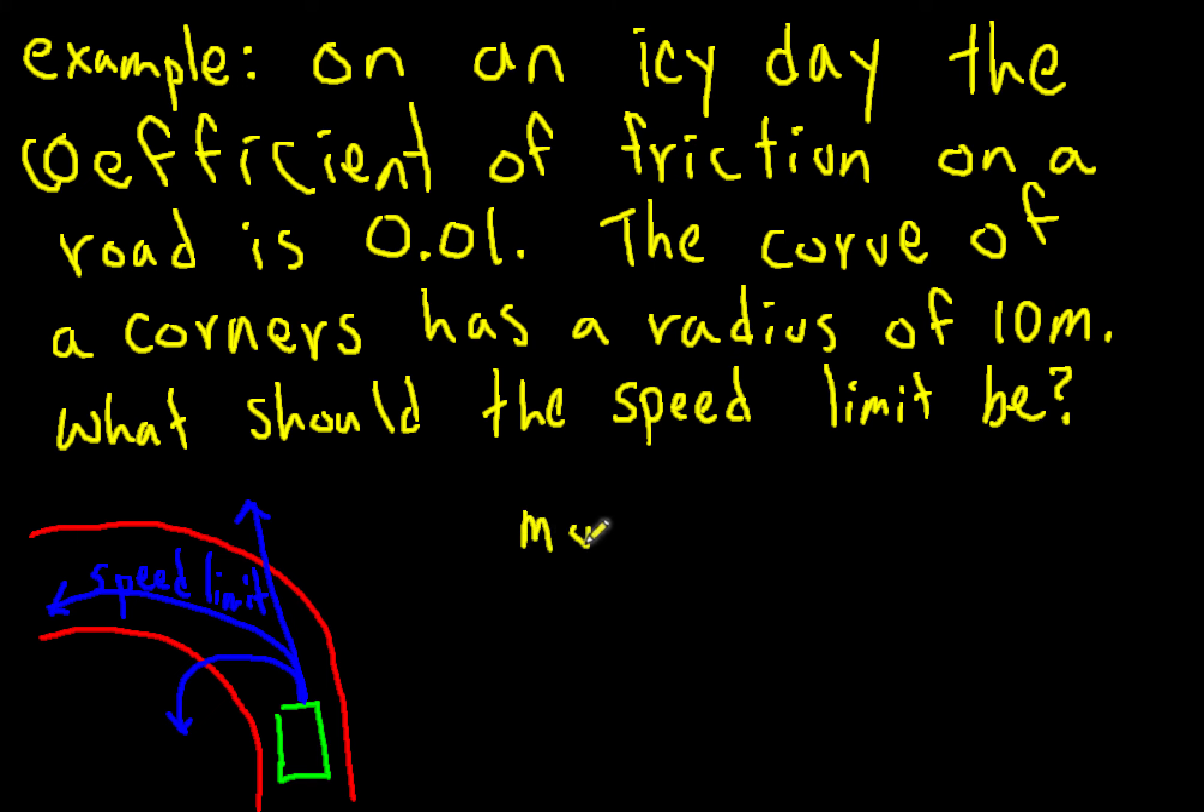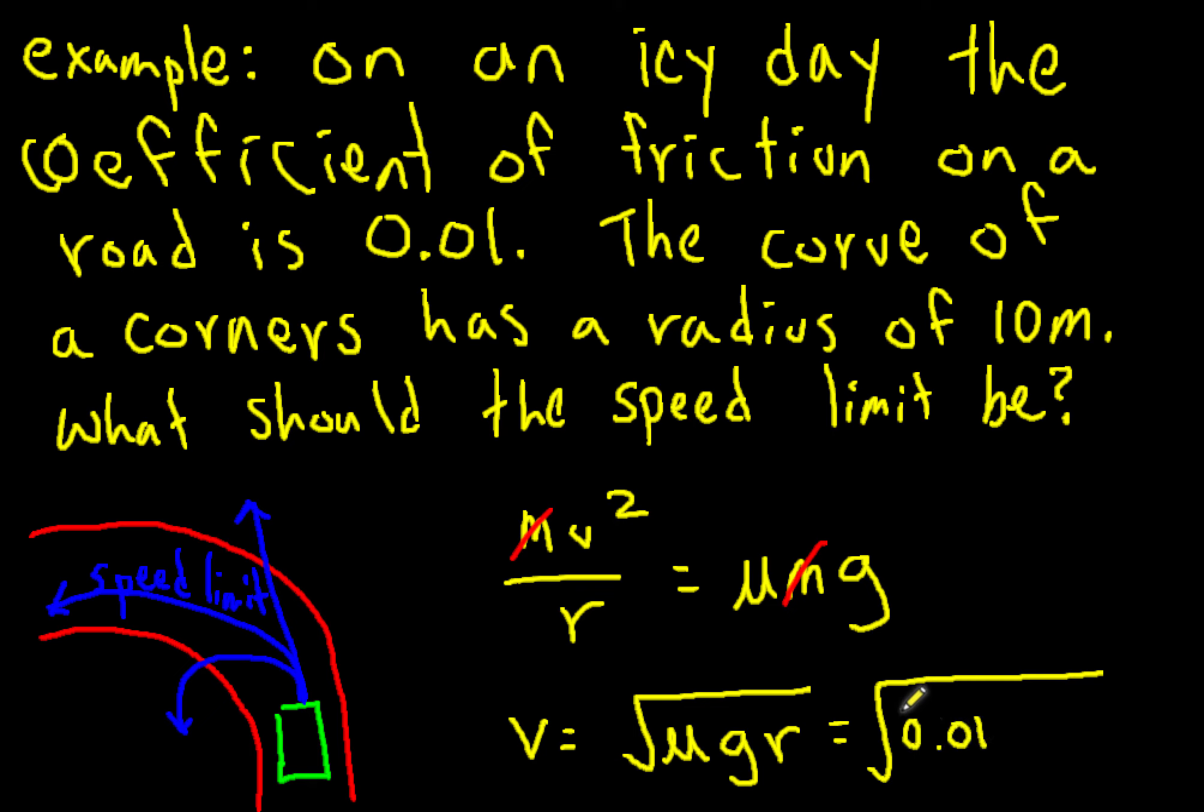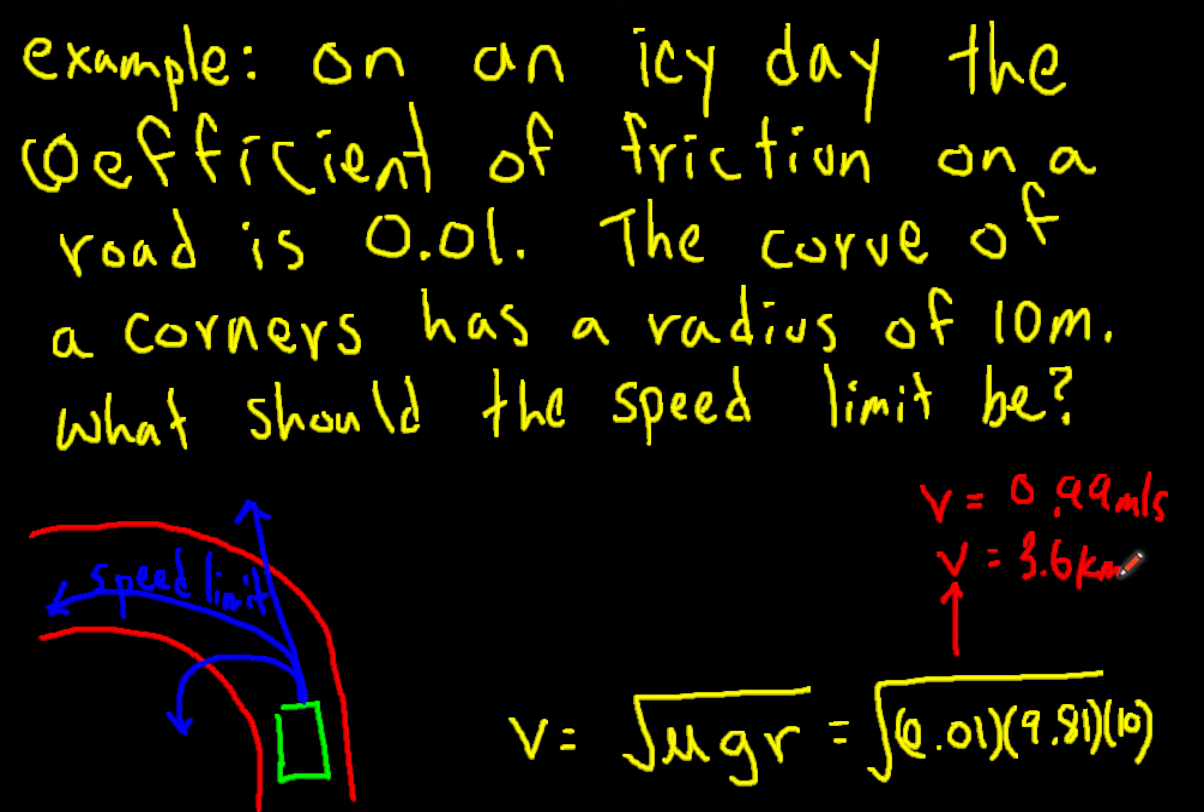We can calculate what the speed should be by using this formula. Centripetal force, mv² over r equals μmg. Mass crosses out on both sides. We can rearrange for v, v equals square root of μgr. This is 0.01 times 9.81 times 10. This gives us a speed of 0.99 meters per second or 3.6 kilometers per hour.